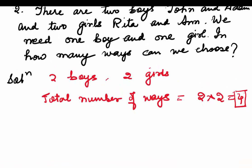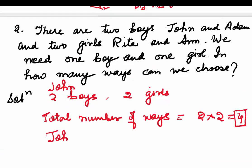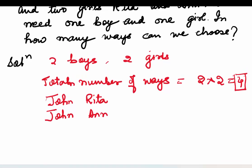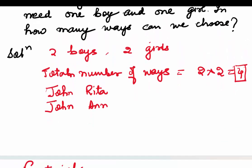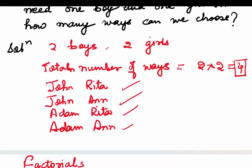We got the answer directly by the fundamental principle of counting. Let's verify: John can pick Rita or Anne — two combinations. Adam can also pick Rita or Anne — two more combinations. The four combinations are: John-Rita, John-Anne, Adam-Rita, Adam-Anne. This matches our answer of 4.